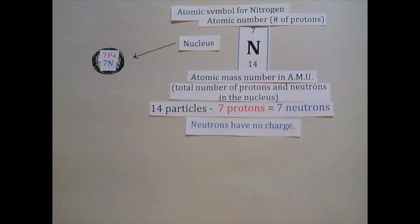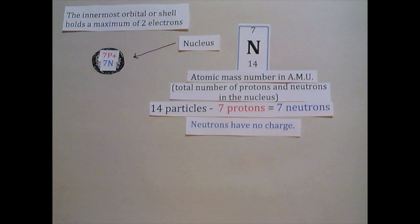Protons have a positive charge, while neutrons have no charge. 14 minus 7 protons means there are 7 neutrons in an average isotope of nitrogen.